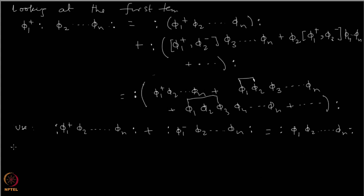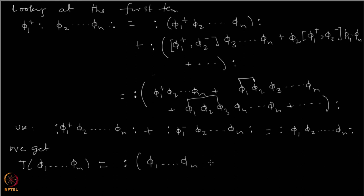We finally get that the time-ordered product of n fields equals the normal-ordered product of those n fields plus all possible contractions. This completes the induction proof of Wick's theorem. Let us continue the discussion further in the next video.